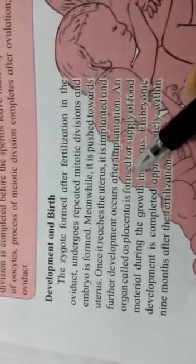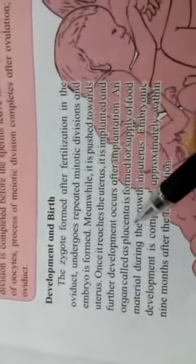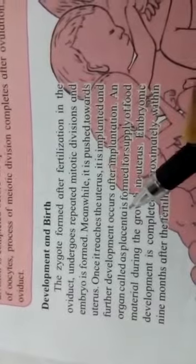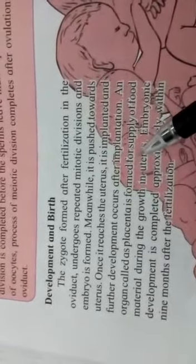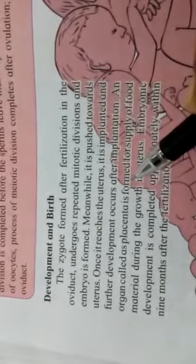The placenta is a flexible pipe-like organ that supplies food to the child. Whatever the mother eats will be supplied to the child through the placenta.